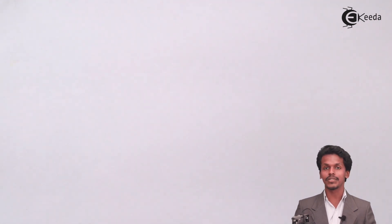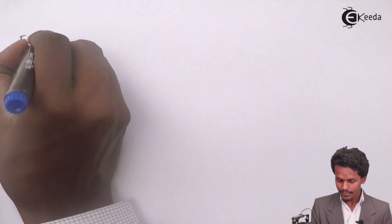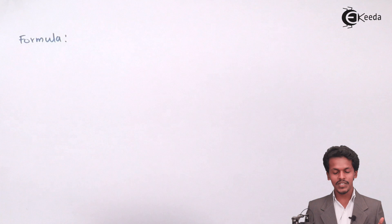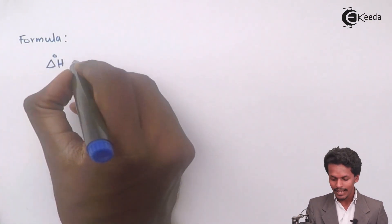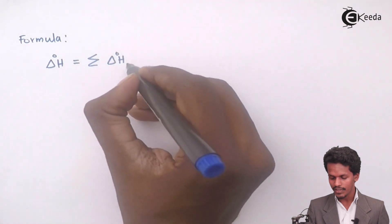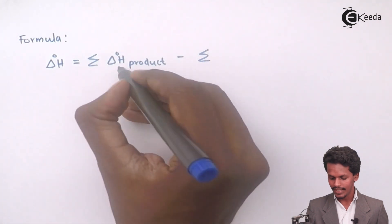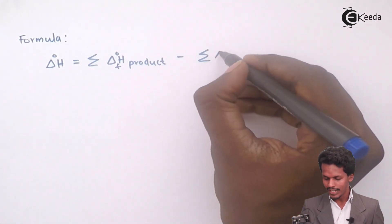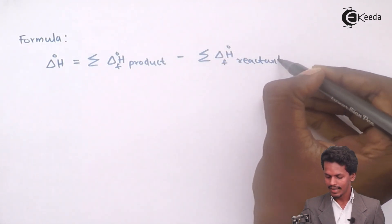Before solving, we should know the formula for the enthalpy change for the reaction. The formula is: ΔH°rxn equals the sum of ΔHf° of the products minus the sum of ΔHf° of the reactants.